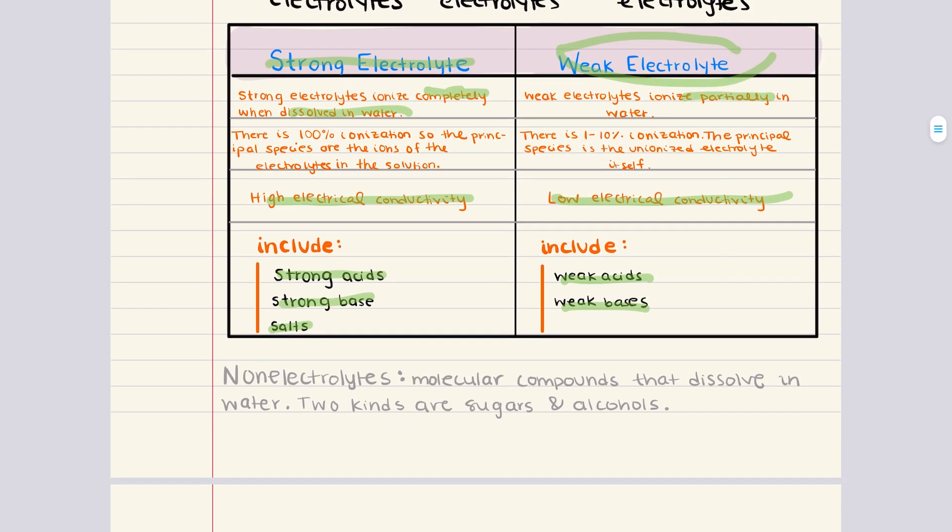Now, there's also the category of non-electrolytes. Non-electrolytes are substances that do not dissociate into ions at all when they're dissolved in water. And so, as a result, these solutions, they do not conduct electricity. So, things that are non-electrolytes are organic compounds, like sugar, and also alcohols. So, sugars and alcohols are common examples of non-electrolytes.